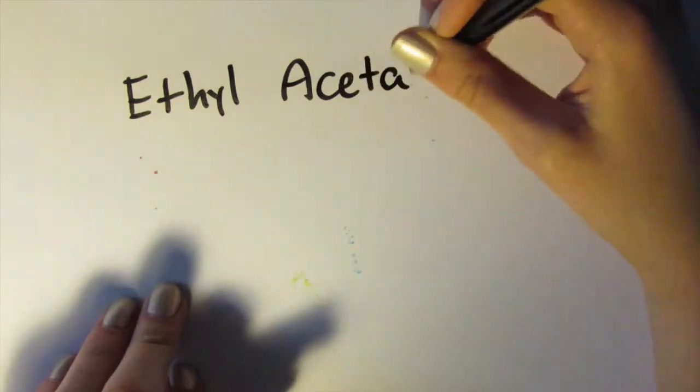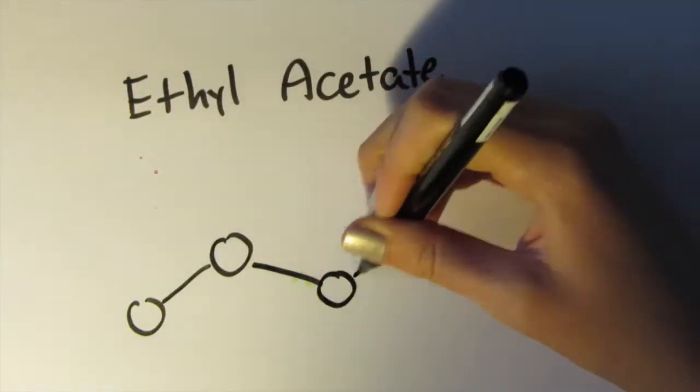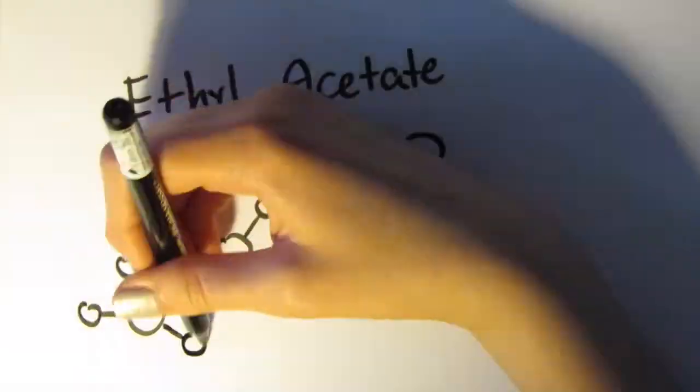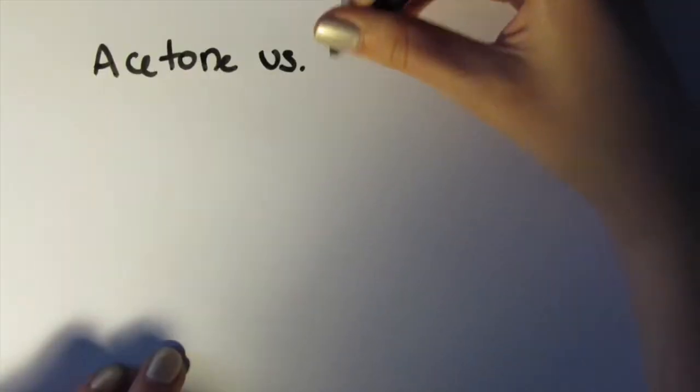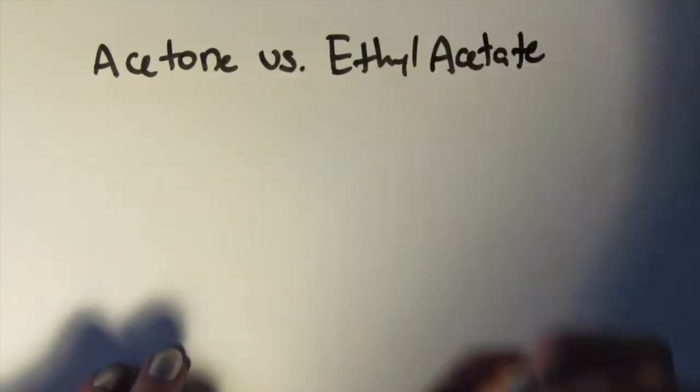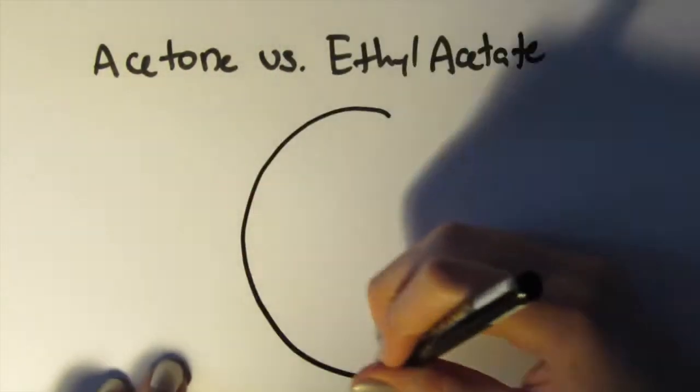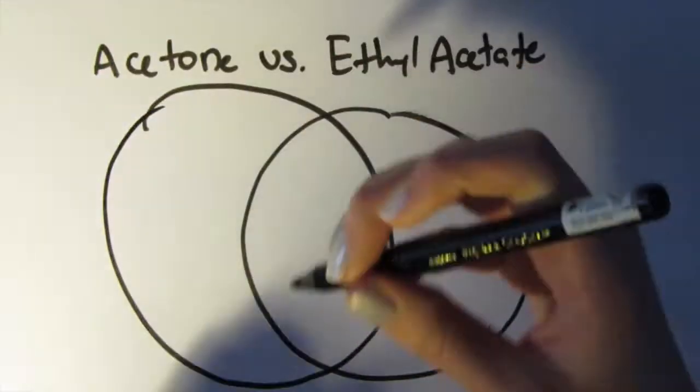In avoiding acetone, many companies have instead produced nail polish removers with another chemical called ethyl acetate. This chemical is both similar and different from acetone. Both are volatile solvents that produce harmful vapors. The main difference is that ethyl acetate is less polar than acetone.